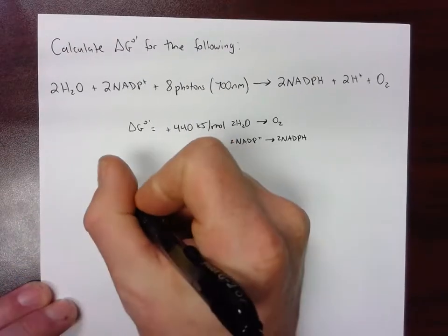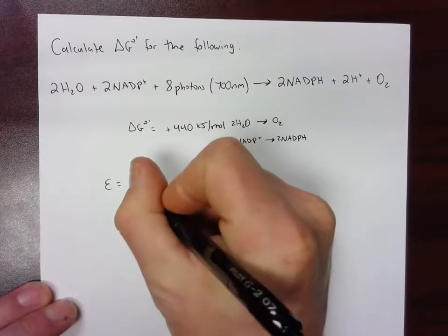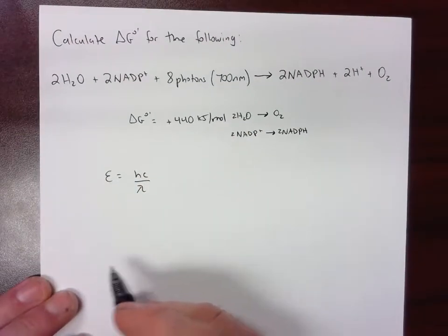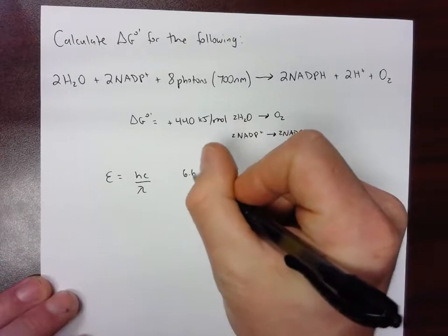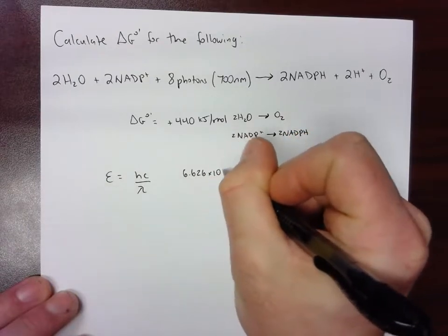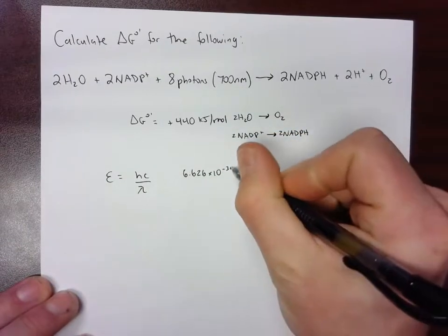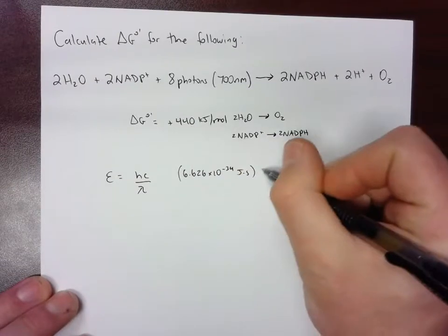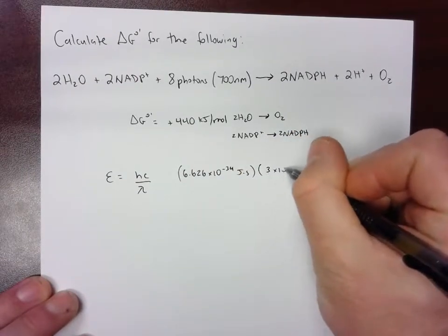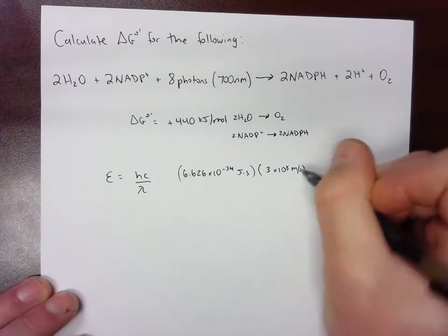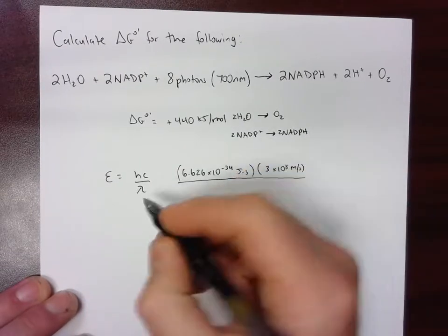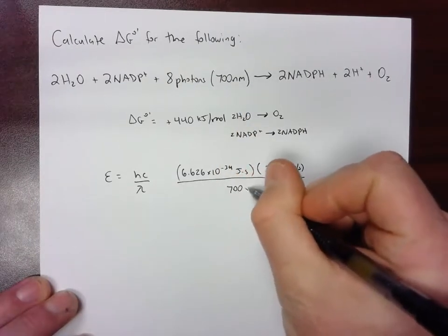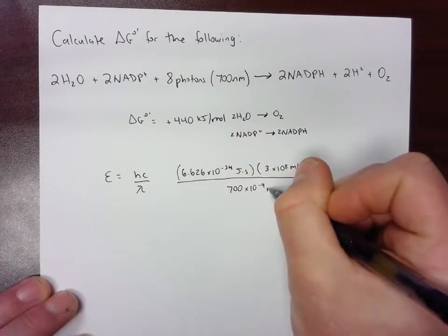We know that the energy of light can be found through this equation here, E equals HC over lambda, where H is Planck's constant, 6.626 times 10 to the negative 34 joule seconds, and then C being the speed of light, and then our lambda in this case 700 nanometers, so 700 times 10 to the negative 9th meters.